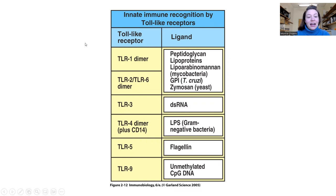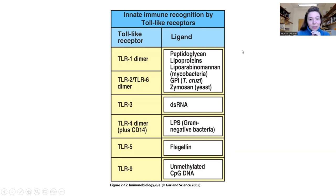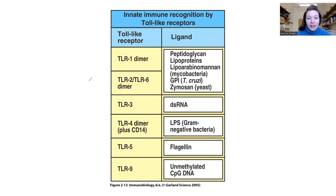Sometimes I do make my students memorize which toll-like receptors bind to what type of bacteria. This is a little bit more information than I would require, especially for toll-like receptor one and two. But the other ones — if you become a microbiologist or an immunologist and study innate immune cells, you need to know these like the back of your hand.